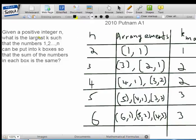Given a positive integer n, what is the largest k such that the numbers 1, 2 till n can be put into k boxes so that the sum of the numbers in each box is the same?